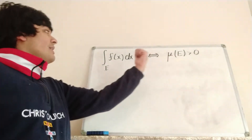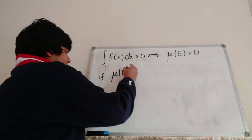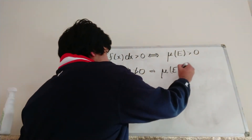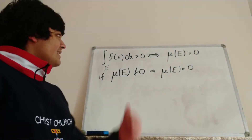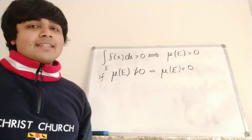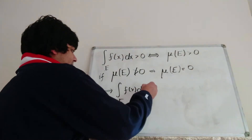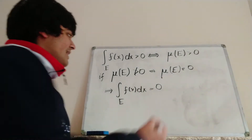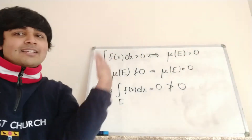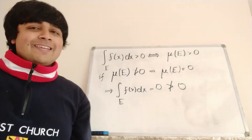So if the right-hand side doesn't hold, then the left-hand side doesn't hold. If μ(E) is not bigger than zero, well then because this quantity is non-negative, it follows that μ(E) equals zero. But the integral of anything against a null set is going to be zero — so E is null, and that means the integral on E of f(x) dx is just zero, which is not bigger than zero. So we've got: if not the right-hand side, then not the left-hand side — that's the contrapositive argument. So that tells us that if the integral of f is bigger than zero, then the measure of E is also bigger than zero.